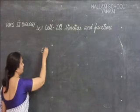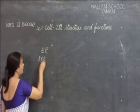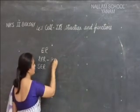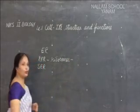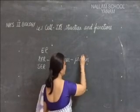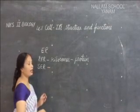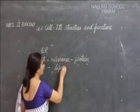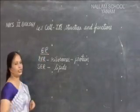Endoplasmic reticulum. There are two types: RER and SER. RER is rough endoplasmic reticulum — it has ribosomes on it, and ribosomes' function is to synthesize proteins. So RER is a protein synthesizer. SER does not have ribosomes on it; it is smooth, but it produces lipids. So lipids and proteins are synthesized by the endoplasmic reticulum.